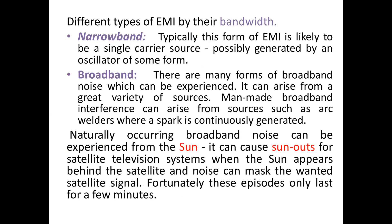A third classification is EMI based upon bandwidth. In narrowband EMI, this form is typically a single carrier source, possibly generated by an oscillator. Broadband EMI has many forms and can arise from a great variety of sources. Man-made broadband interference can arise from arc welders where a spark is continuously generated. The sun and its sunspot activity is an example of broadband interference for satellite television, where noise can mask the wanted satellite signal.